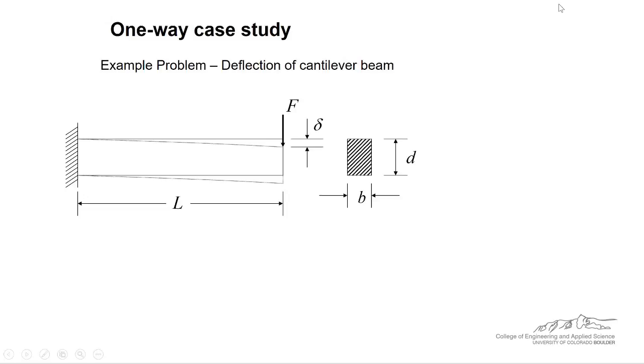The problem that we're going to be working with is depicted here. Here we have what is known as a one-way case study. So one-way means that we're only looking at the effect of a single variable. So I've got this cantilever beam. It's tied in or anchored to the wall here on the left. And on the right side it's just kind of free hanging almost like a diving board. And obviously if you apply a force big F to the end of this beam then it's going to deflect.